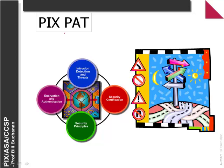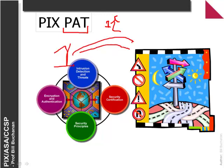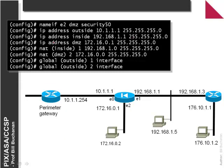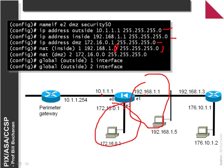Along with NAT we can have port address translation (PAT). PAT is useful because we can use just one address and overload it with multiple TCP ports. From outside we have one address but that can connect to multiple addresses inside the network. We define our outside address, inside address, and DMZ. We define our internal address pool of 192.168.1.0 and our DMZ pool as 172.16.0.0. To enable PAT we just say 'outside one interface' for both and we will get port address translation.